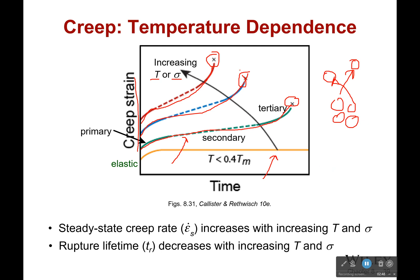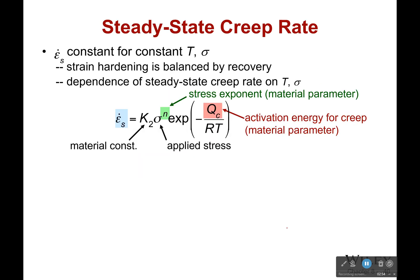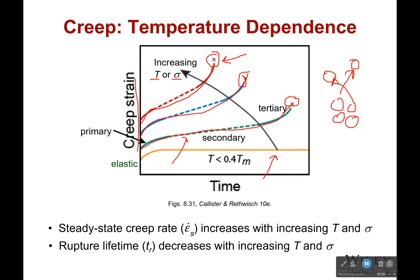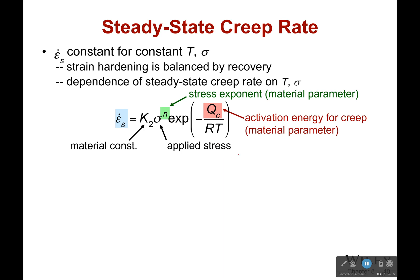Higher temperature will also lead to failure more quickly. Now let's talk about the steady-state creep rate — that's the dotted line area. It is constant for a constant temperature and stress; if you change the stress or temperature, it changes as well. What's going on at this point is that strain hardening is being balanced by recovery. The temperature is causing recovery, making the material less hard, while straining adds plastic deformation, making it harder — both balance each other out, giving you that steady-state rate.